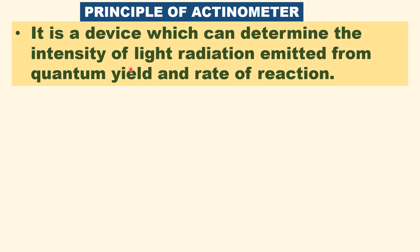An actinometer is a device which can measure the intensity of light radiation emitted from the source. That is, using quantum yield and rate of reaction, the intensity of light radiation emitted or absorbed can be calculated.